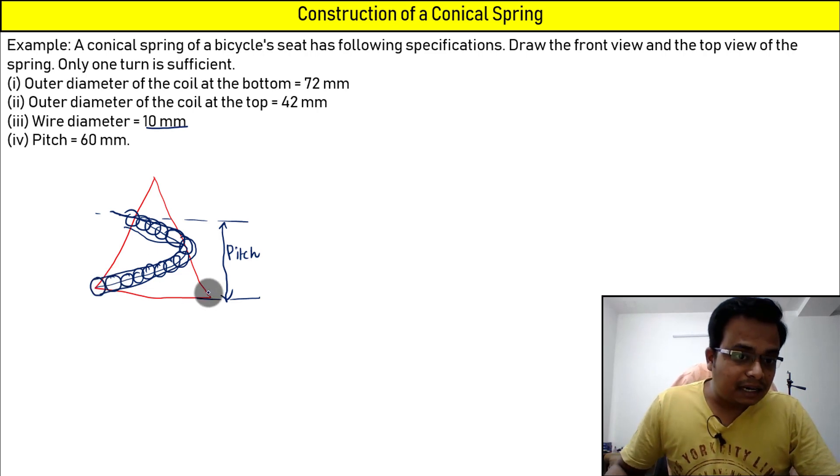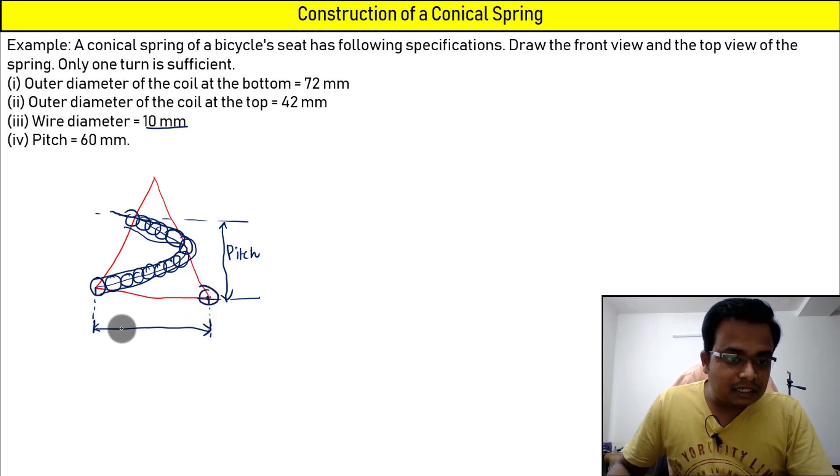Apart from that, this is the coil, right from the center, center to center. That is the mean. I'm writing this in short: mean coil diameter at the bottom.